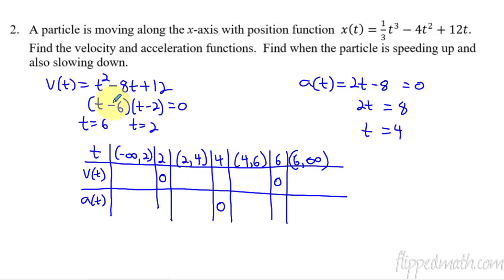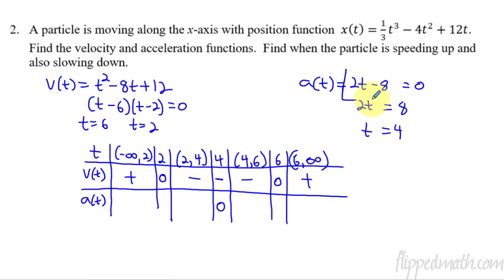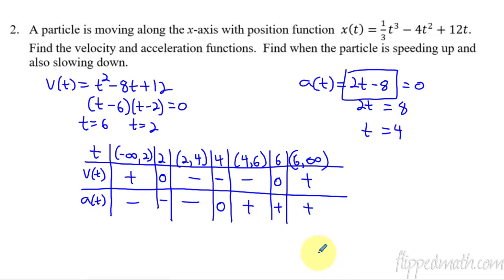Let's check the left side of 2 in the velocity function: super negative minus something is positive. A number in the middle like 4: 4 minus 6 is negative, so velocity is negative in those middle intervals. On the far right at positive infinity, velocity is positive. For acceleration, 2t minus 8: to the left of 4, a super negative number times 2 minus 8 is still negative. To the right of 4, a super positive number gives us positive. So acceleration is negative, negative, negative to the left of 4, and positive, positive, positive to the right.